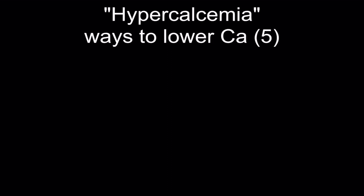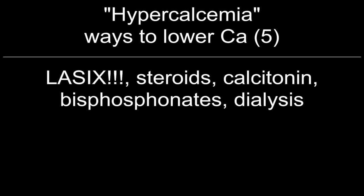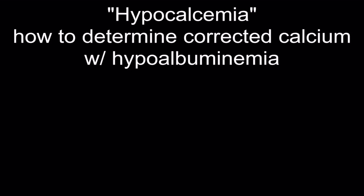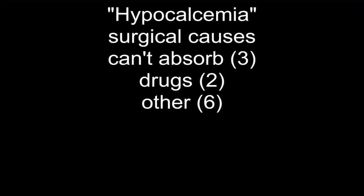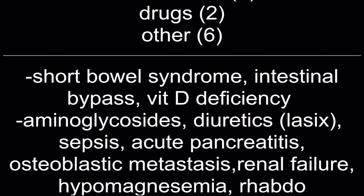Ways to lower calcium: Lasix, steroids, calcitonin, bisphosphonates, and dialysis. Corrected calcium with hypoalbuminemia: (4 minus measured albumin) × 0.8 plus measured calcium. Surgical causes of hypocalcemia include short bowel syndrome, intestinal bypass, vitamin D deficiency, aminoglycosides, diuretics such as Lasix, sepsis, acute pancreatitis, osteoblastic metastasis, renal failure, hypomagnesemia, and rhabdomyolysis.